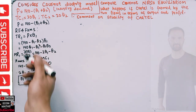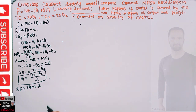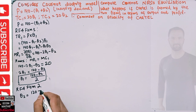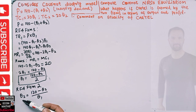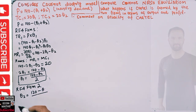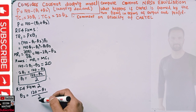Similarly, we can calculate the reaction function for firm 2 using the same steps. The reaction function for firm 2 comes out to be q2 = (120 minus q1) divided by 2. This tells us the optimal quantity firm 2 should produce given firm 1 produces q1.